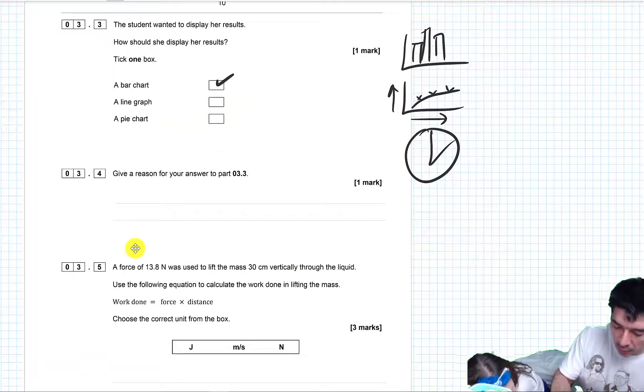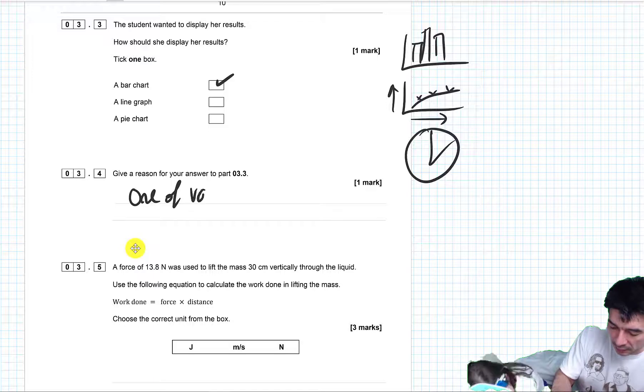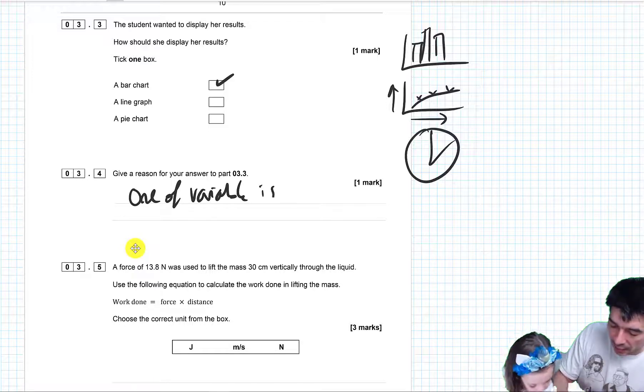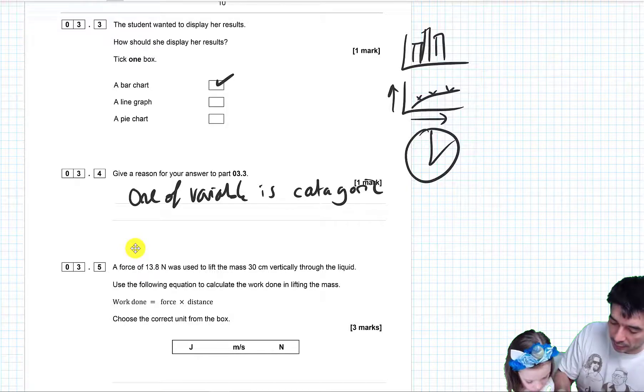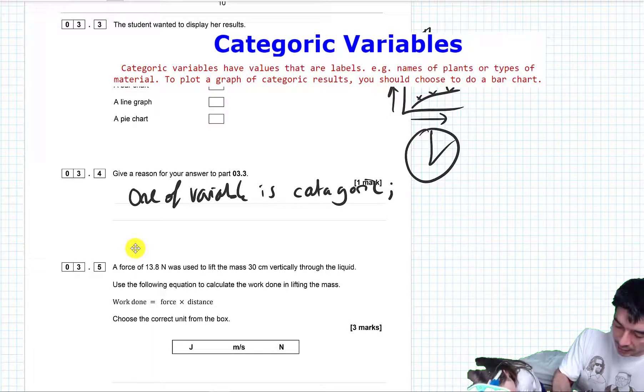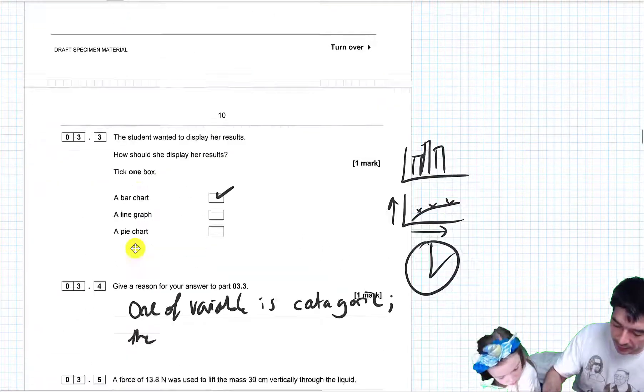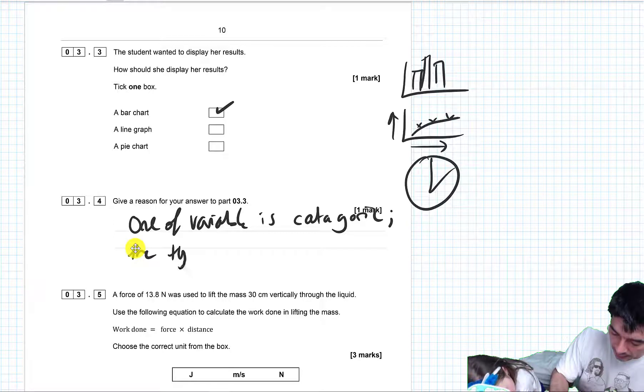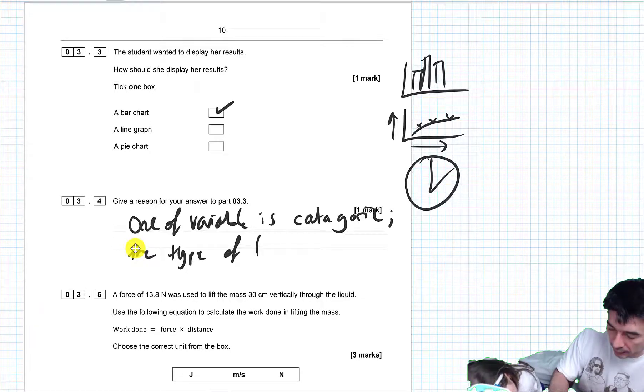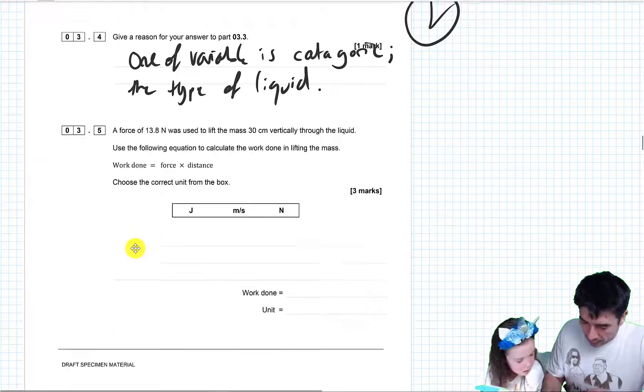So it's because one of the variables is a categoric variable. Which one is that? One of the variables is categoric, it is the type of liquid.